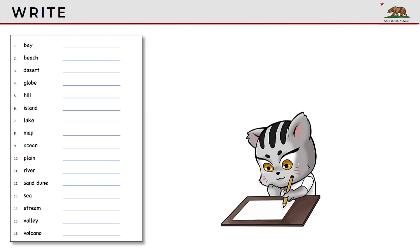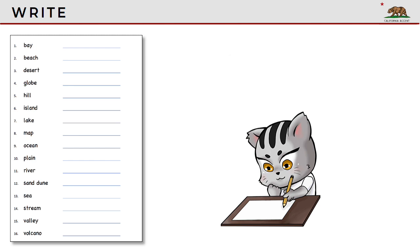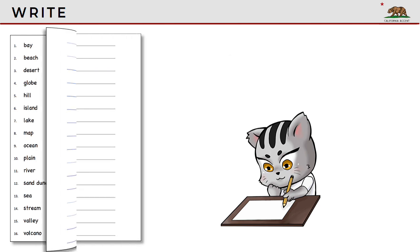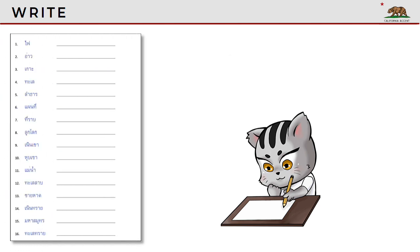In Section 2, you should write each word in Thai. If you don't have a worksheet, you can use a sheet of paper. Pause the video until you finish. In Section 3, you should write each word in English. If you don't have a worksheet, you can use a sheet of paper. Pause the video until you finish.